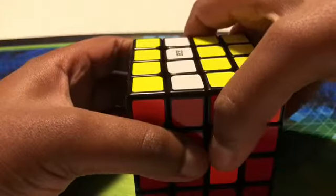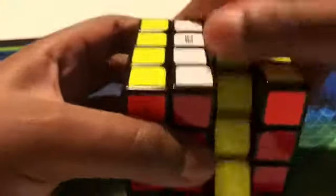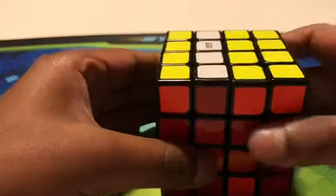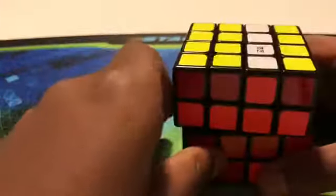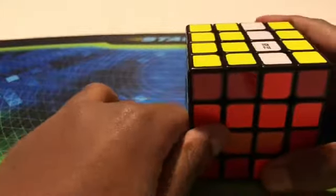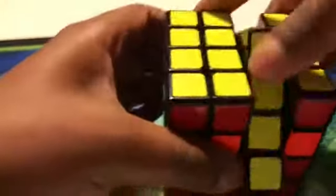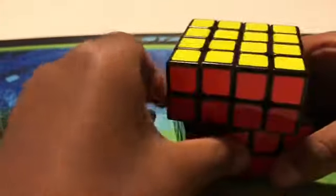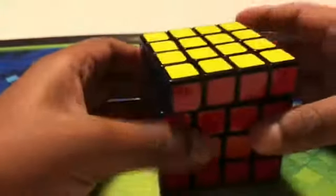And then 2R2, we do that again, and then lowercase u2 is when you move the top row twice to the right, and then there's 2R2. Do that again, and then turn the top row U2 again, and then you just turn the top row again.